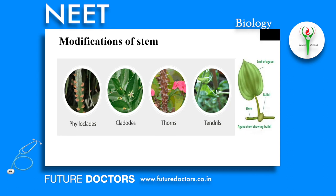Modifications of Stem: Stem tendrils are thin, long and sensitive structures which can coil around a support. Axillary tendrils rise from the axillary buds — example: Passiflora. Extra-axillary tendrils develop near the axillary bud — example: Luffa and Cucurbita. Apical buds are modified to form tendrils — example: Vitis vinifera.